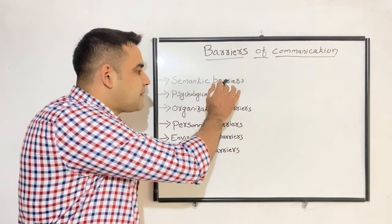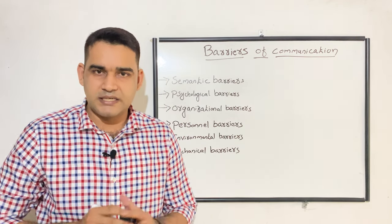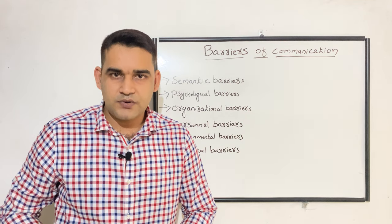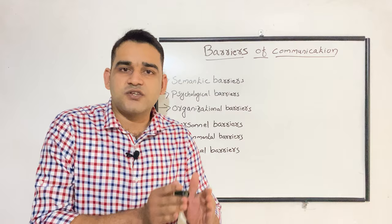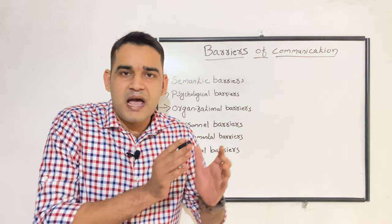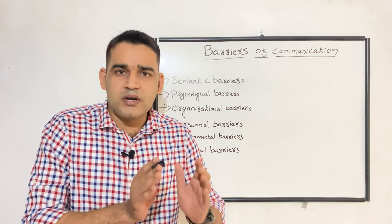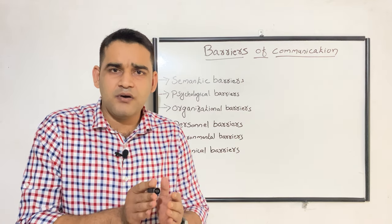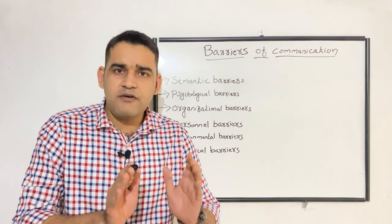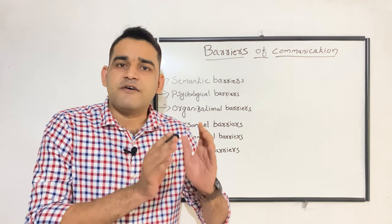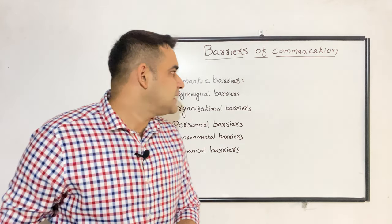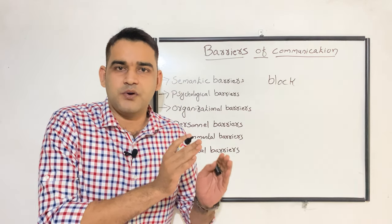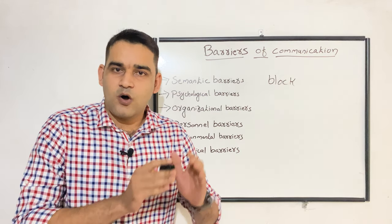The first one is semantic barriers. Semantic barriers are related to language — semantics is the science of meaning. The first semantic barrier is a word which has more than one meaning. For example, the word 'block' — here I have used it related to obstruction, as a barrier.